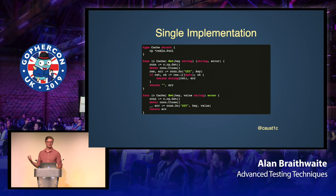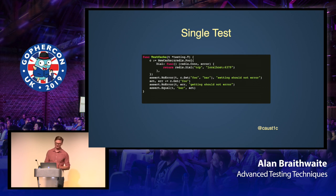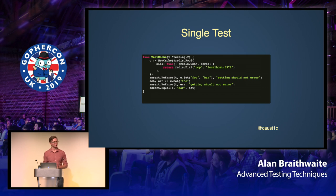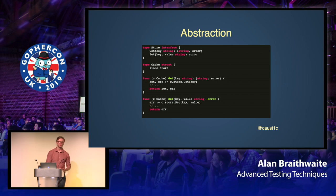Starting with a single implementation: here we have a cache that uses Redis as a backend with two methods, get and set, which call directly into the Redis library. When testing, we simply instantiate a new cache, pass in the Redis initializer, and test directly against Redis. Notice this requires spinning up a Redis instance — Docker is a great tool for that. I think this is the best way to start with any project. However, you'll eventually get to a point where you need to build an abstraction on top of this, whether it's stubs or a different implementation.